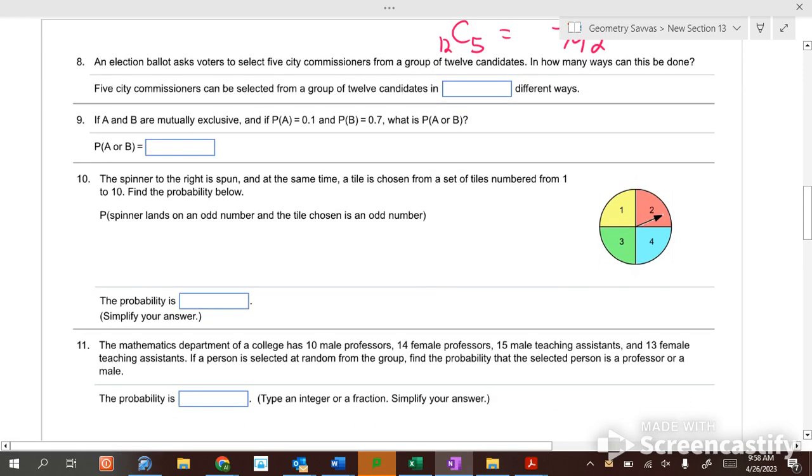A and B are mutually exclusive. A is point one. B is point seven. What's the probability of A or B? What do you do with when it's an or statement? Add them. So you get point eight.